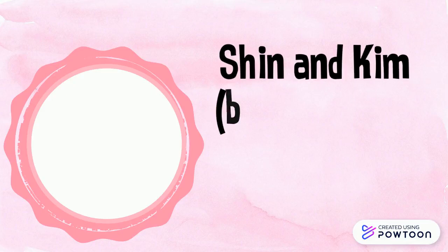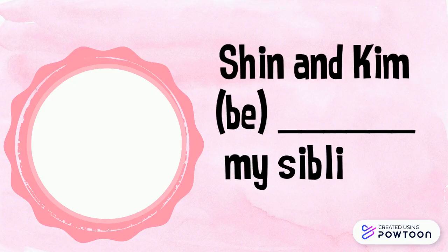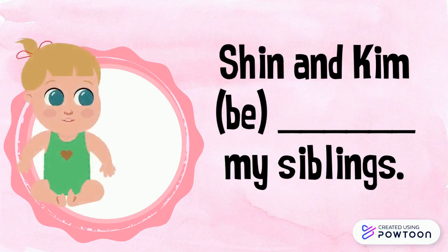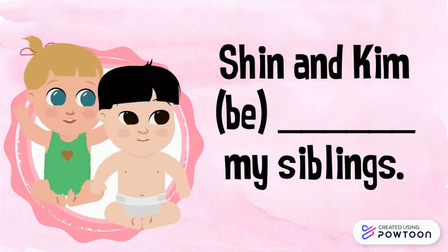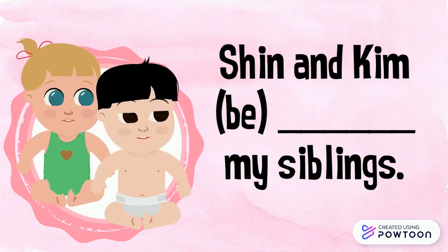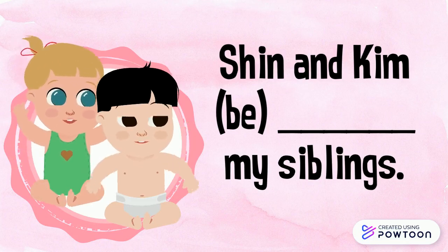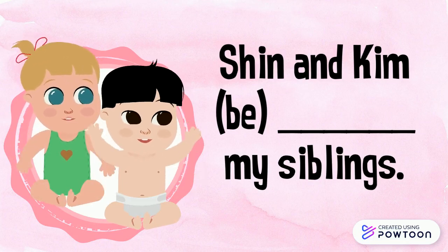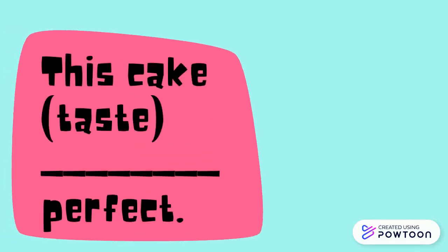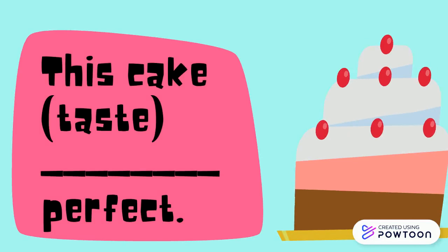Let's practice. Complete the sentence with the form of the verb that agrees with the subject. These sentences cover rules 1 and 2. Shin and Kim [be] my siblings. This cake [taste] perfect.